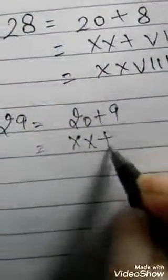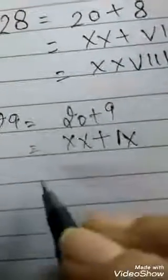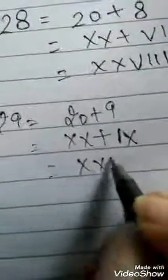I hope you will understand 1 to 25. Now how to make 29? It's very simple. 20 plus 9. Yes, 20 ka symbol hai double X, and 9 ka symbol hai IX. So it's made 29.